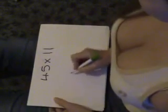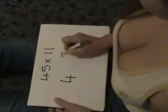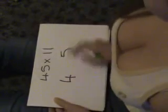It's really simple. Let's say 45 times 11. All you do is put the numbers, 45, at the edges, add them together. So 4 plus 5 equals 9. The answer is 495.